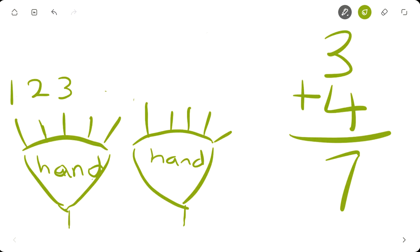Now, hold your other hand up and count 4 fingers: 1, 2, 3, 4.